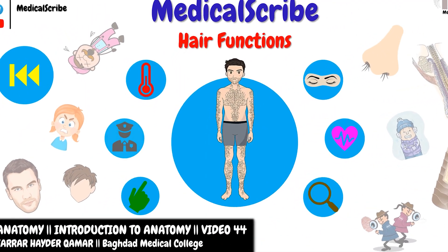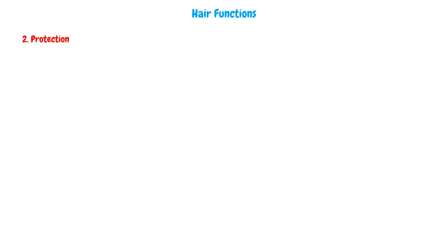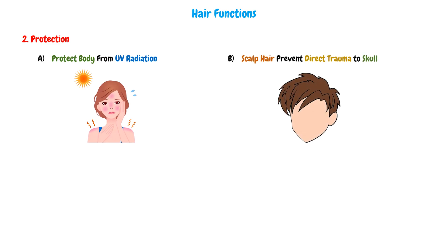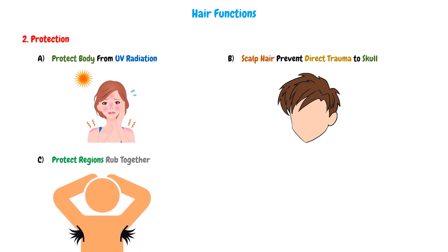The second function is that the hair will protect our body from 4 main things. A: it will protect the body from ultraviolet radiation that harms the skin. B: the hair in the scalp will play an important role in preventing direct trauma to the skull. C: the hair will protect the regions that rub together, such as the armpit. D: the hair will be considered as a barrier that protects the body from foreign substances, such as the nostrils hair, which will help in keeping dust and foreign matter out.